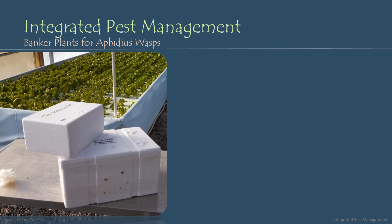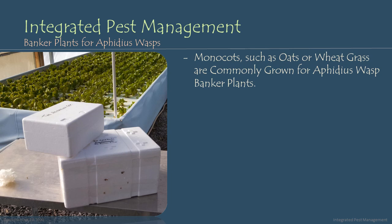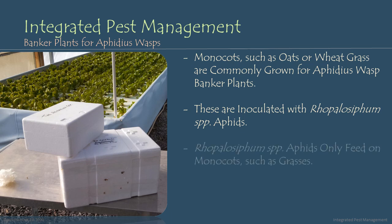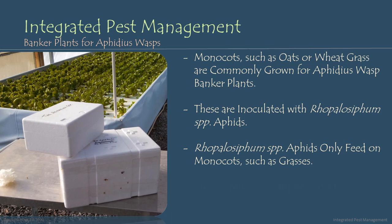In a banker plant strategy with aphidious wasps, monocots such as oats or wheatgrasses are commonly grown. These grasses are inoculated with Rhopalicyphum aphids. These Rhopalicyphum species only feed on monocots such as grasses, so they won't move from the grass banker plants into my crops. These monocot aphids serve as supplemental prey for the aphidious wasps I'm utilizing as beneficials in my growing environment.